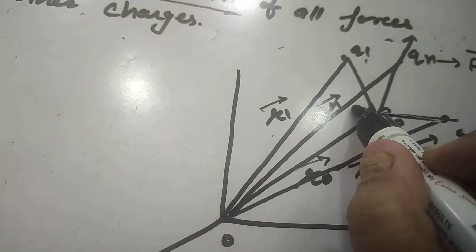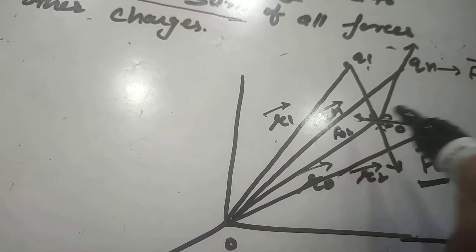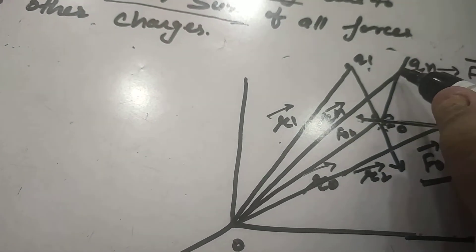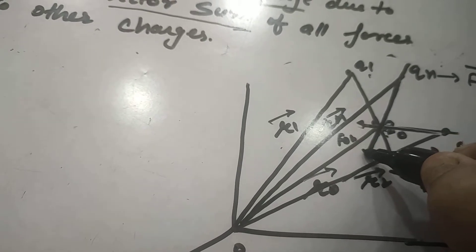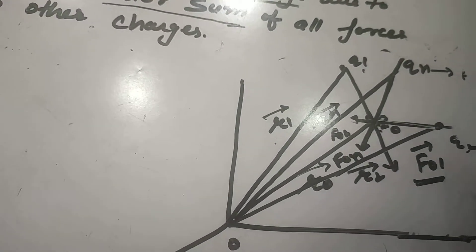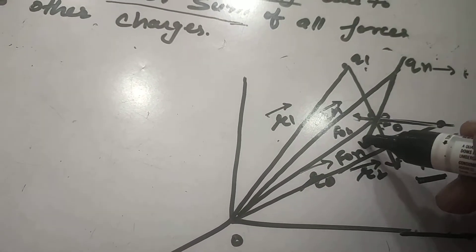Q naught is here, so q naught will repel it. The direction is f naught 2. Similarly, the direction of force will be in this direction. This is f naught n. So this is the diagram.